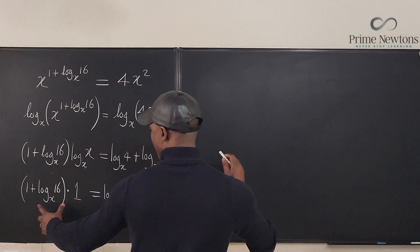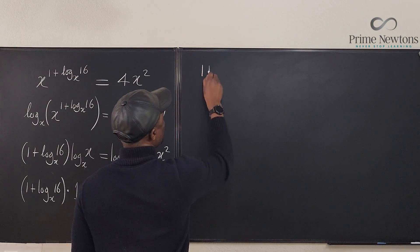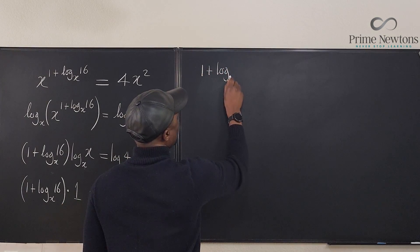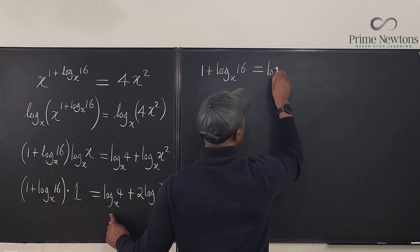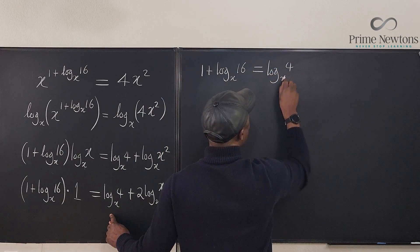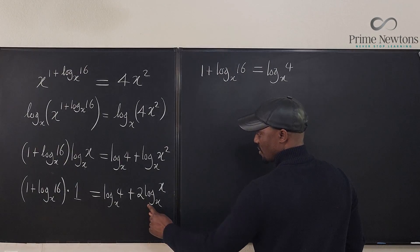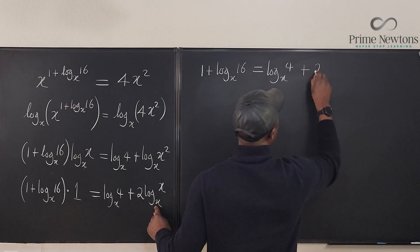So I can have on the left-hand side 1 plus log to base x of 16 will be equal to log of 4 base x, and here it's just going to be 2 times 1, which is just plus 2.